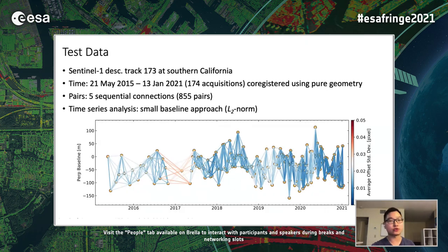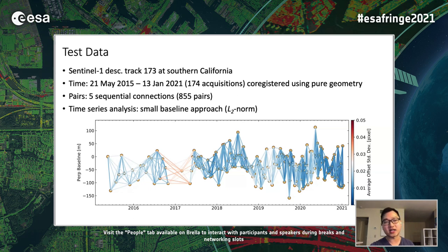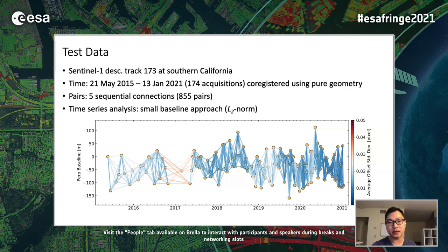We process a Sentinel-1 descending track in Southern California with over 170 acquisitions. The SLCs are co-registered using the dual geometry method, and we form a network of offset pairs with five nearest sequential connections, giving over 800 pairs. We conduct a classic small baseline time series analysis with least-square estimation, the same as in InSAR. The network is shown where each dot represents a SAR image, each line an offset pair, and the line color represents the average range offset standard deviation.